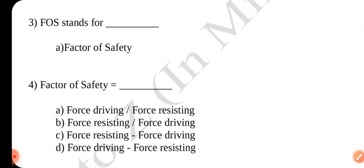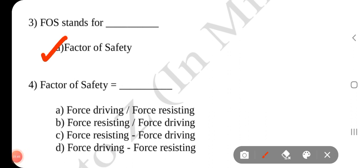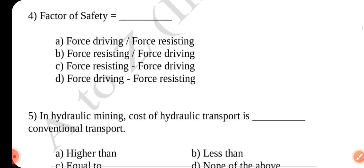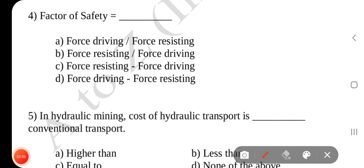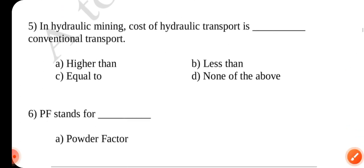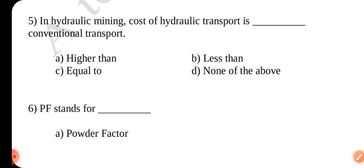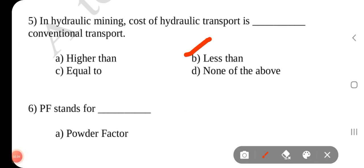Question number 3: FOS stands for Factor of Safety. Answer is A. Question number 4: Factor of safety is force resisting divided by force driving. Answer is B. Question number 5: In hydraulic mining, the cost of hydraulic transport is less than conventional transport cost. Answer is B.